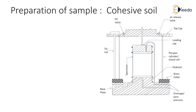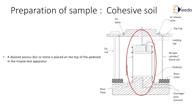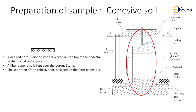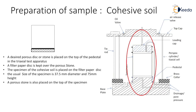Now we will understand how the sample is prepared for the triaxial test. A porous disk or stone is placed on the top of the pedestal in the triaxial test apparatus. A filter paper disk is kept over the porous stone. The specimen of the cohesive soil is placed on the filter paper disk. The usual size of the specimen is 37.5 mm diameter and 75 mm height. A porous stone is also placed on the top of the specimen.